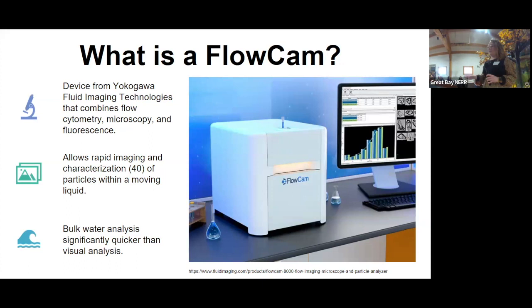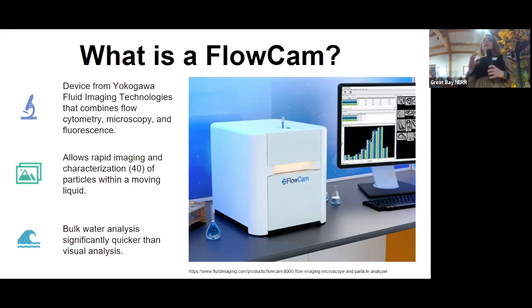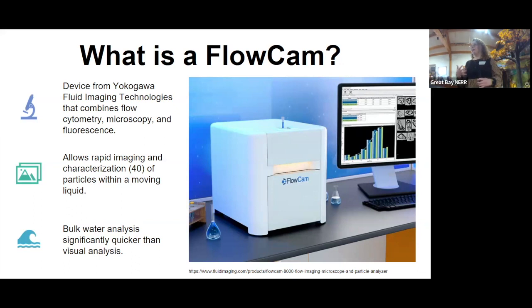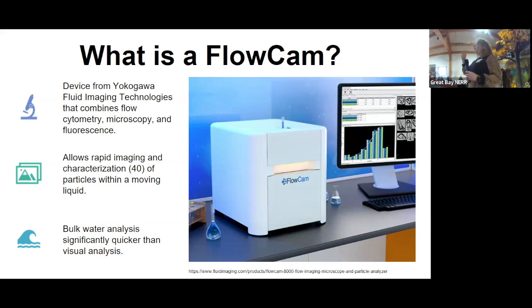I'm just going to talk really quickly about what a FlowCam is. This is a device from Yokogawa Fluid Imaging Technologies, and they essentially combine the ability to do flow cytometry, microscopy, and occasionally fluorescence. That is an option you do have to choose or pay extra for — we don't have that option, but it can be really useful depending on your research. It essentially allows rapid imaging and characterization of particles within a moving liquid. It will suck your liquid down through your pipette, as you see in the middle here, goes to the flow cell, takes images, and looks at everything that's within the liquid.